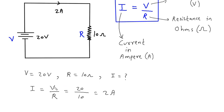So, I is equal to V by R. V is 20 and R is 10. So, V by R is 2 ampere.